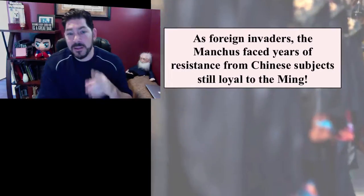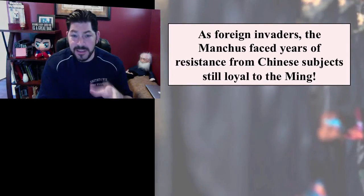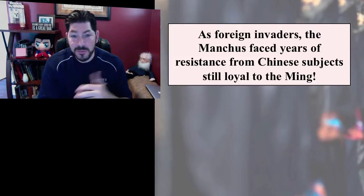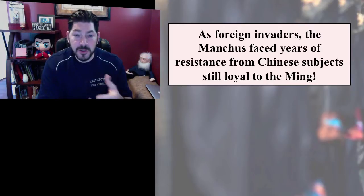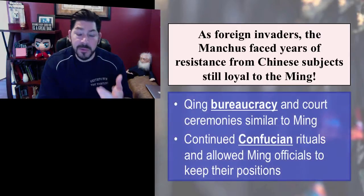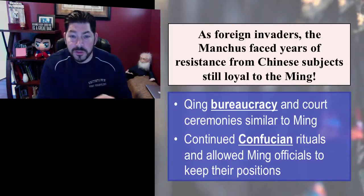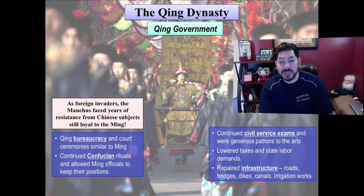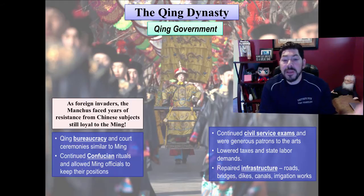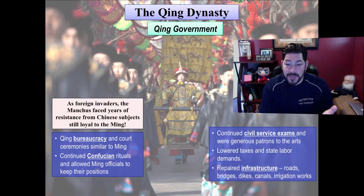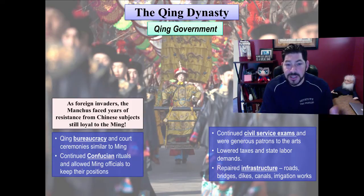They did face much resistance from the Chinese who were loyal to the Ming and others who simply did not want foreign groups ruling them. So they had to handle this in certain ways. Part of that was to create a Confucian bureaucracy and continue Confucian rituals, and also to continue the civil service exams. They carried over a lot of the Ming Dynasty characteristics of government, making it mostly a Confucian society. They repaired the infrastructure, lowered taxes, and did other things to try to convince the population that they were the righteous rulers with the Mandate of Heaven — benevolent rulers.